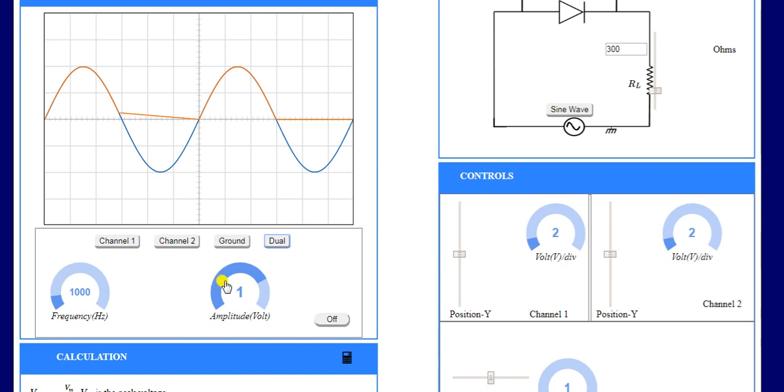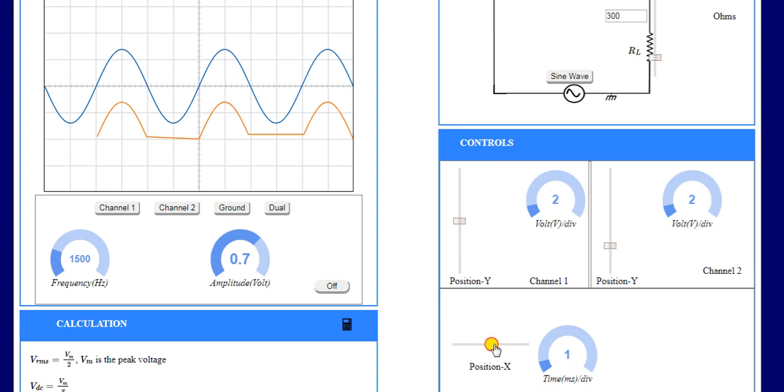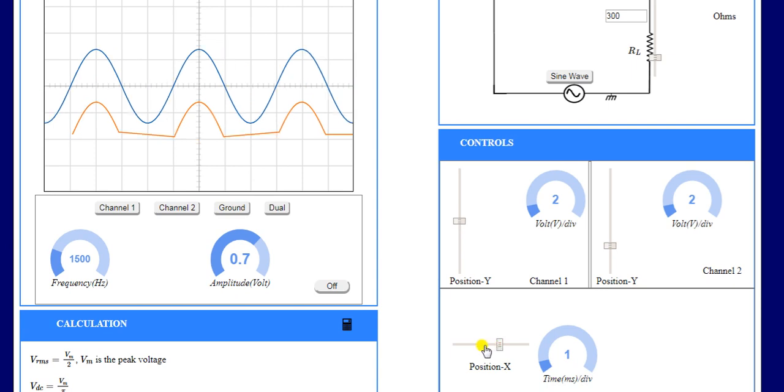With the help of these steps, you can change the frequency and amplitude of the signals. You can change the position of input and output with the help of these steps, and you can change the time per division with the help of this step.